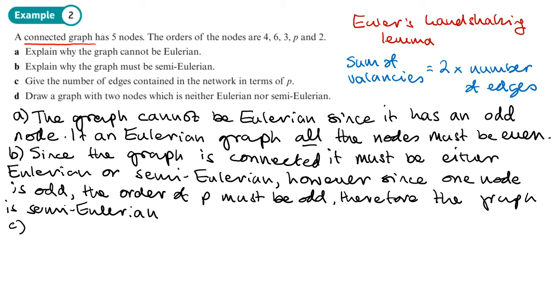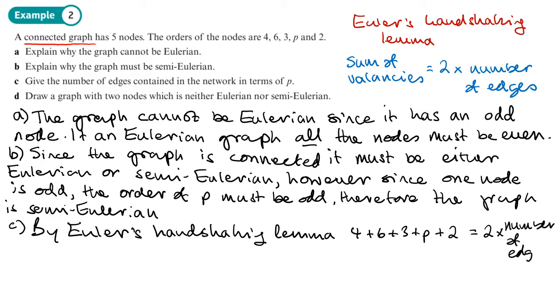So what's the sum of the valences? Well, that's going to be four plus six, or actually maybe we should write, by Euler's handshaking lemma. So we should always state what formula we're using. Yeah, by Euler's handshaking lemma, four plus six plus three plus P plus two, the sum of the valences, equals two times the number of edges. So basically, if we find this sum and divide it by two, we get the number of edges. So write down number of edges equals what divided by two. So this is going to be 15 plus P divided by two. So 15 plus P divided by two is the number of edges.